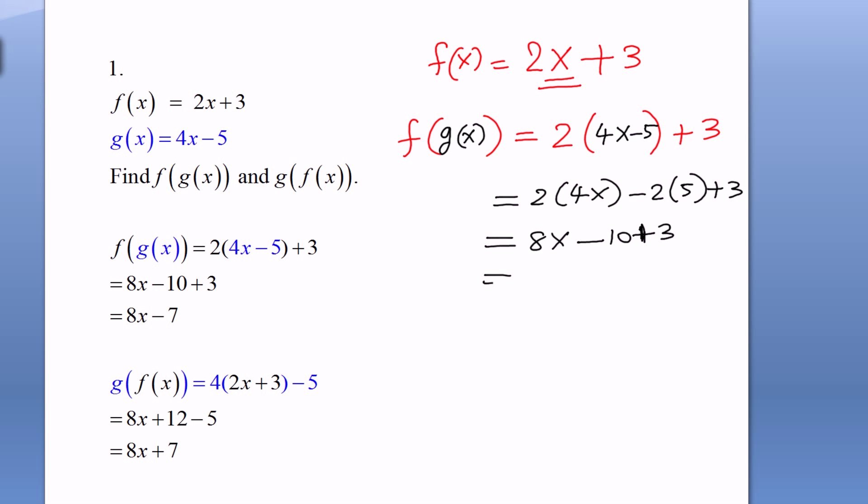And that is 8x. Negative 10 plus 3 is negative 7. So f(g(x)) is 8x - 7.